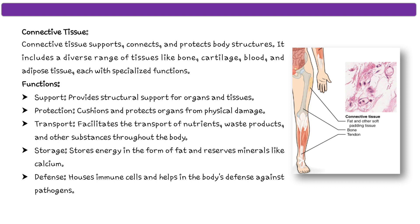The functions of connective tissue are: first, support — it provides support to organs and tissues. Then protection — it cushions and protects organs from physical damage. Next, transport — it facilitates the transport of nutrients, waste products, and other substances throughout the body. Storage — it stores energy in the form of fat and reserves minerals like calcium. And defense — it houses immune cells and helps the body's defense against pathogens.